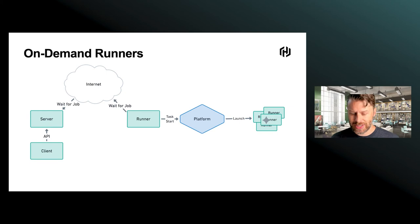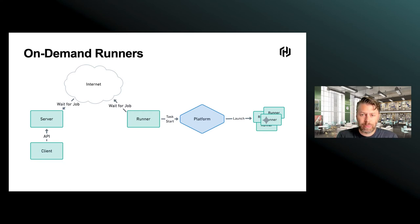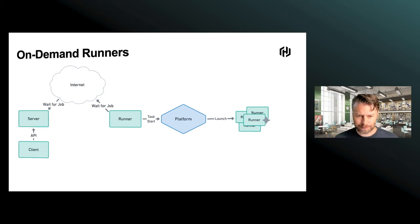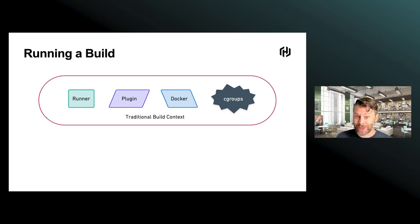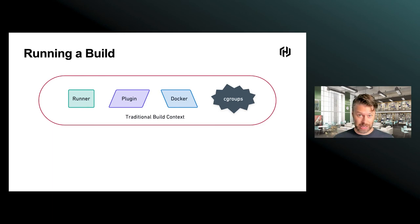One of the other things it unlocks is functionality that's actually really hard for a lot of platforms to realize — specifically, how do you do builds? Let's look at how builds happen today. In a traditional build context, you've got your runner, you've got a plugin. Let's say we're building a Docker container. You've got Docker, and then you've got the C group APIs — the low-level APIs that Linux exposes that Docker instruments in order to start containers and do builds. So a request comes in: hey, I want to do a build. It goes through to the runner, gets transferred over to the plugin.